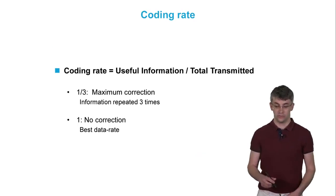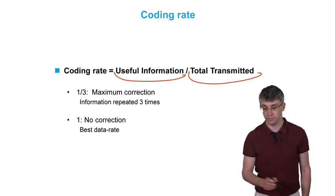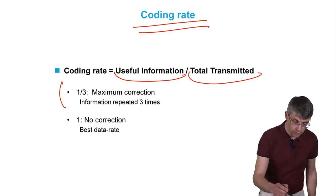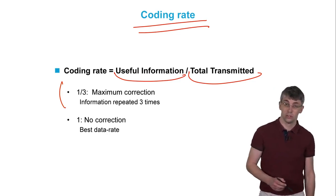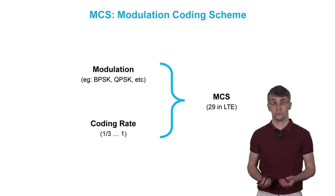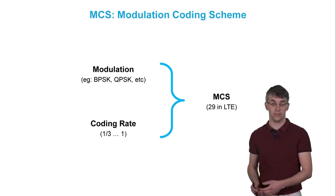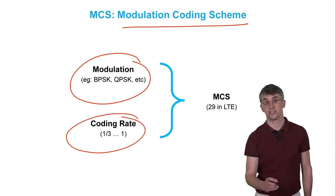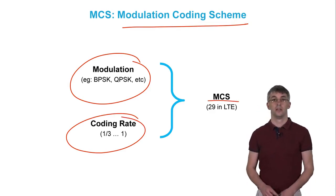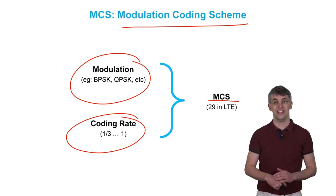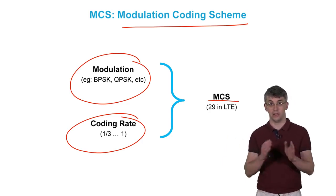We call the ratio of the useful information over the total transmitted information coding rate. In LTE, this can vary between one third for an extensive correction to almost one for nearly no correction. Up to now, we have seen that depending on the propagation conditions, LTE can use different modulations and different coding rates. The combination of a given modulation with a given coding rate is called modulation coding scheme, or in short MCS. Since channel conditions are changing continuously and independently for each mobile, LTE has to adapt the MCS of each mobile in real time.